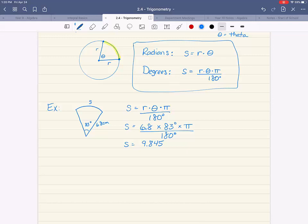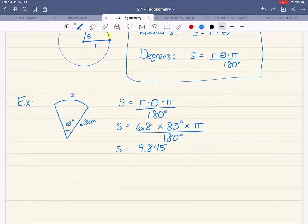You get 9.845. You need to read how many significant figures they want. In this case, since our radius is given with a tenth place, two significant figures, we're going to put our answer as two significant figures. So it would be 9.8 centimeters. Because S is a line, a curved line, it's measured in centimeters, not centimeters squared. There's the answer for that one.